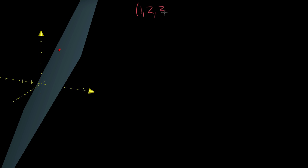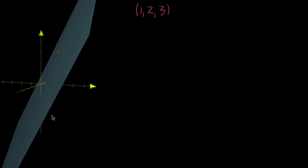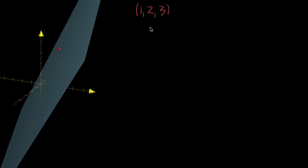What I have pictured here is a red dot representing a point in three dimensions, and the coordinates of that point are one, two, three — so the x-coordinate is one, the y-coordinate is two, and the z-coordinate is three. I have a plane that passes through it, and the goal of the video is to find a function L that takes in a two-dimensional input x and y, and this function L should have this plane as its graph.